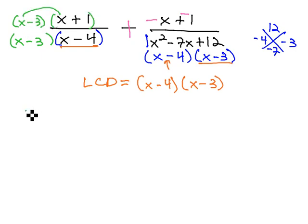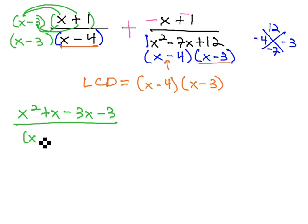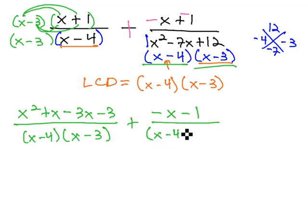Foiling out, we get x squared plus x minus 3x minus 3 over the common denominator of x minus 4, x minus 3. Plus, the second fraction we see already has both the factors we need. So, we'll keep it the same with a negative x and a negative 1 over our common denominator of x minus 4, x minus 3.